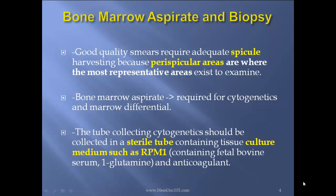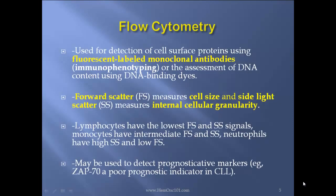Flow cytometry. Used for detection of cell surface proteins using fluorescent-labeled monoclonal antibodies, immunophenotyping, or the assessment of DNA content using DNA binding dyes. Forward scatter measures cell size and side scatter measures internal cellular granularity. Lymphocytes have the lowest forward scatter and side scatter signals. Monocytes have intermediate forward scatter and side scatter.